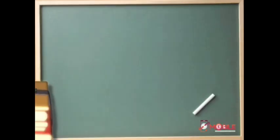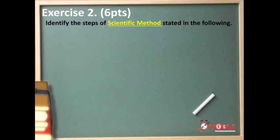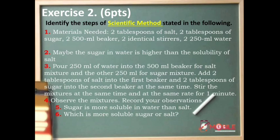Let's now have your exercise two. This is also six points. This time I want you to identify the steps of scientific method stated in the following. So since this is also six numbers, this will be six points. And we have the same rule, you have to pause this video and start answering. Good luck.